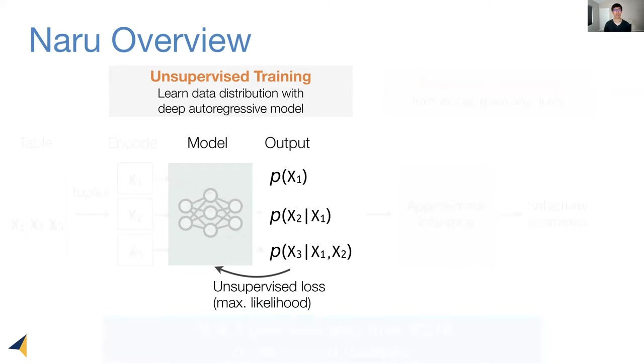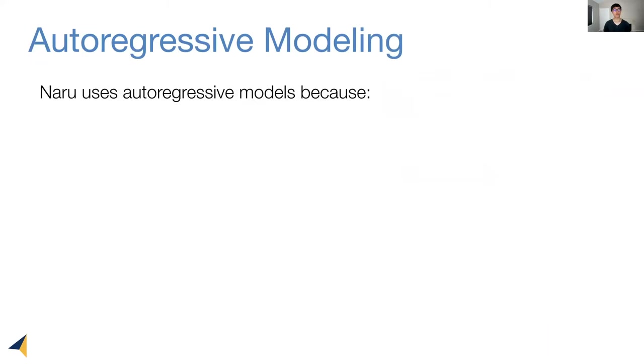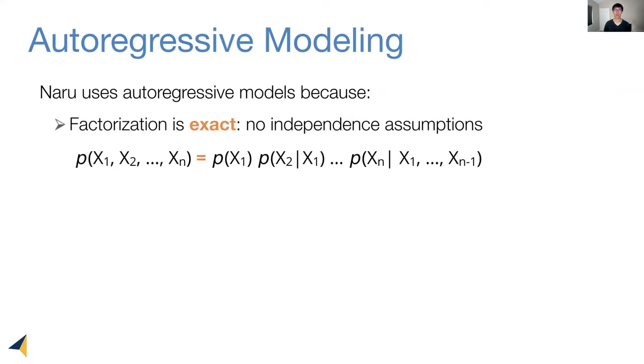There are two compelling reasons Naru uses autoregressive models. First, they allow us to get rid of independence assumptions. And this is because autoregressive models use an exact factorization, where a high dimensional distribution over N columns on the left-hand side here is exactly represented by the product on the right-hand side.